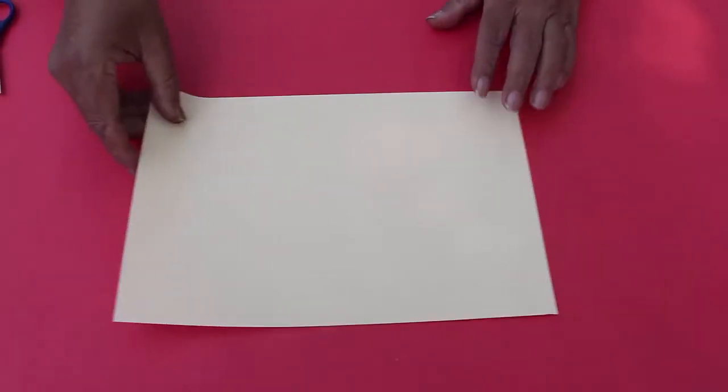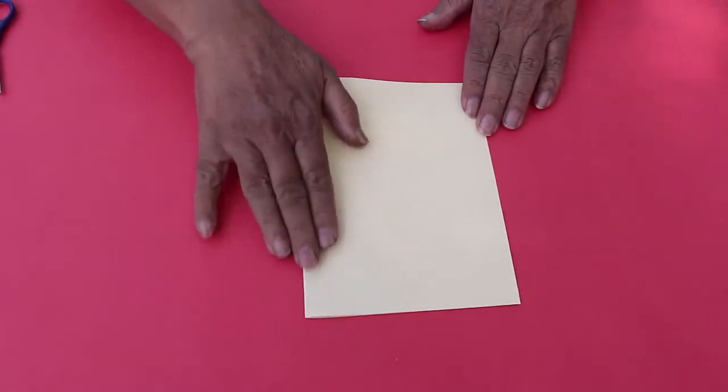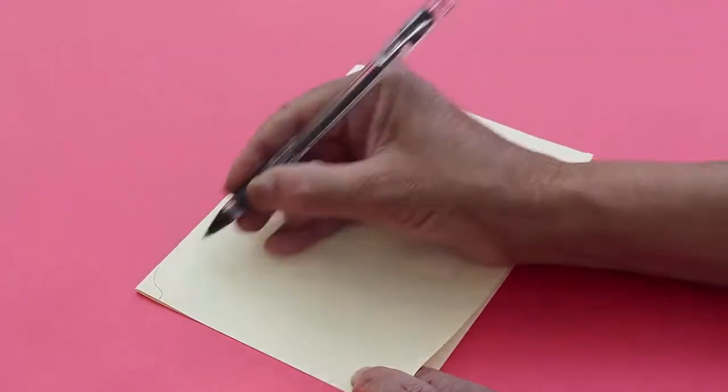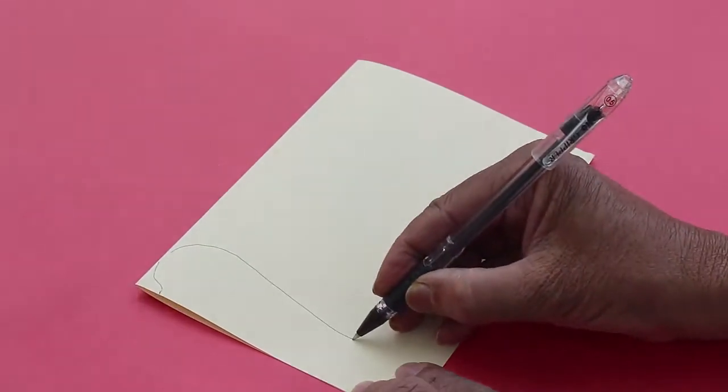First fold the card sheet in half. Now with the fold on the top, with the help of a pen draw the swan.